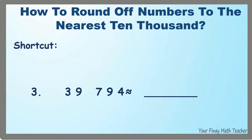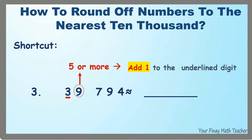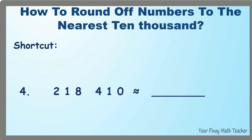Number 3: underline the 10,000's digit, which is 3. Look at the digit to its right. If it is 5 or more, add 1 to the underlined digit. Since it is 9, add 1 to 3 — 3 becomes 4. The rest of the digits, including the encircled one, become zeros. So, 39,794 is rounded off to, or nearest to, 40,000.